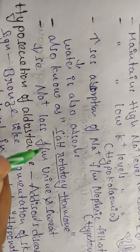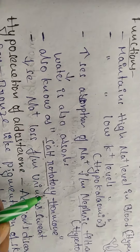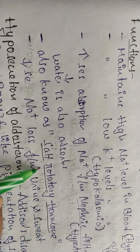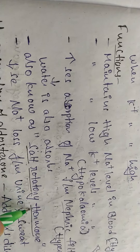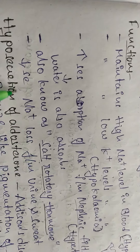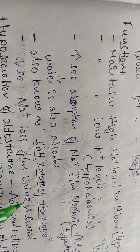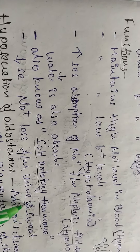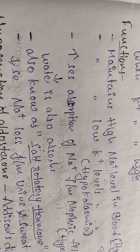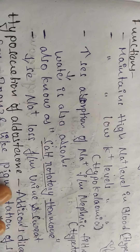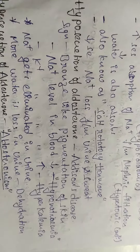Aldosterone hormones are also called saltatory hormones. They decrease the sodium loss from urine and sweat, thereby helping maintain adequate sodium levels in the body.